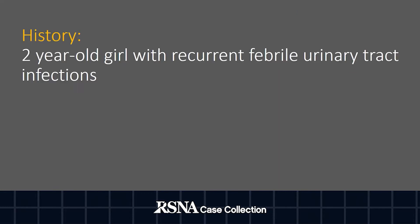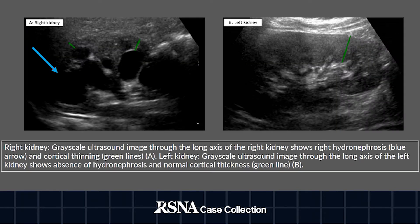Our patient is a two-year-old girl with a history of recurrent febrile urinary tract infections. Ultrasound was done first and it shows right hydronephrosis with cortical thinning of the right kidney. The left kidney, on the other hand, is unremarkable with normal cortical thickness and no hydronephrosis.